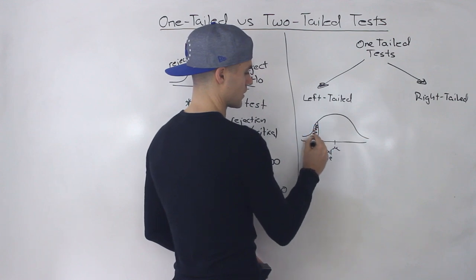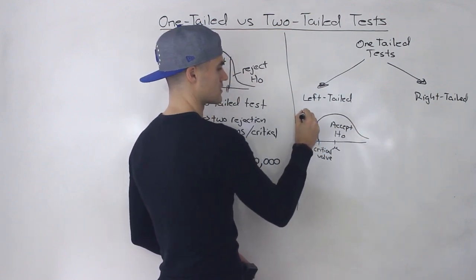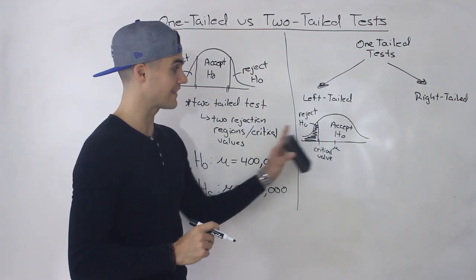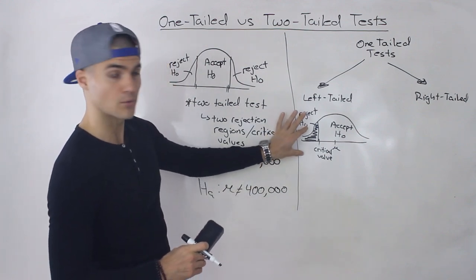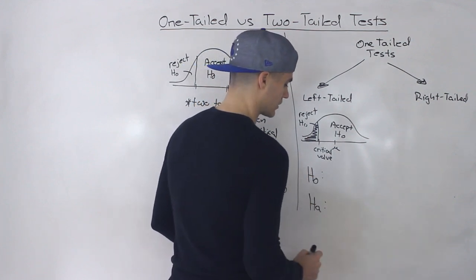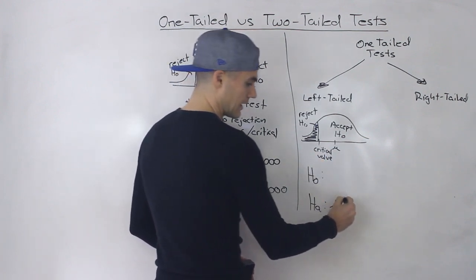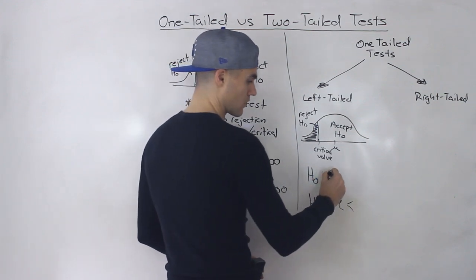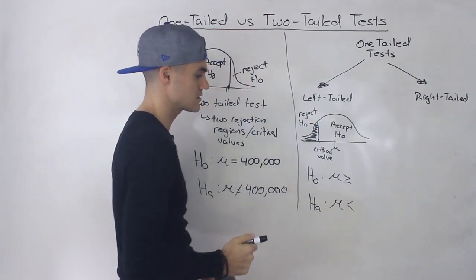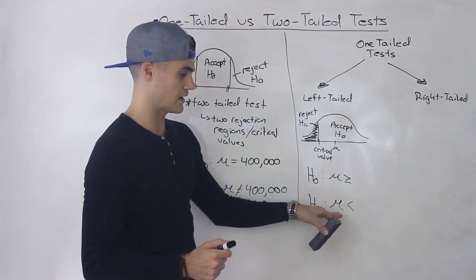The rejection region is on the left side, and we fail to reject the null on the right side. So this is called a left-tailed test — it's a one-tailed test because there's one rejection region or one critical value. The null and alternative will look like this: the null is 'greater than or equal to' a certain value, and the alternative — where you reject — is when the mean is 'less than' that value.